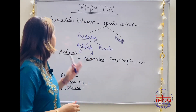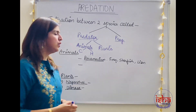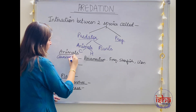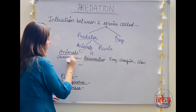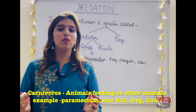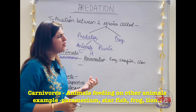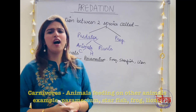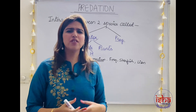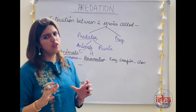Let's begin with animal predators. Animal predators can be carnivores — those animals that feed on other animals. Examples include Paramecium, frog, starfish, larger fishes that feed on smaller fishes. Tiger and lion — they are all carnivores.